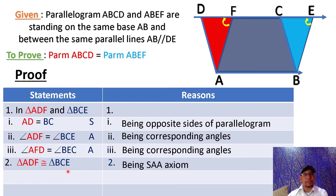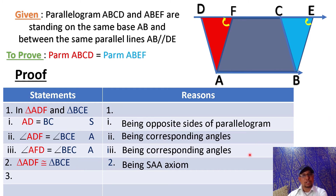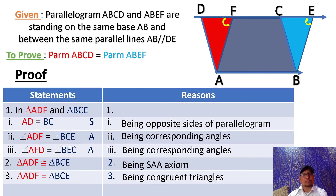As I have already told you in my previous lecture, when two triangles are congruent, their areas are always equal. So from statement two, these two triangles are congruent. So we can write: area of triangle ADF equals area of triangle BCE. The reason is: being congruent triangles. If the triangles are congruent, their areas are always equal.